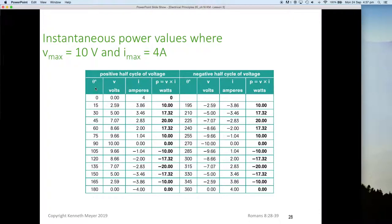Our columns are labeled degrees, instantaneous volts, instantaneous amps, and instantaneous power. So let's have a look at zero. At zero degrees we've got zero volts, four amps, so four times zero is zero watts.